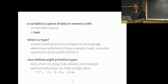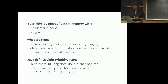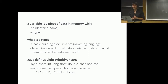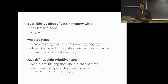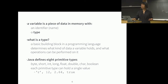What did we talk about last Thursday? We went into some nitty-gritty overview of Java basics. We talked about really basic things like what a variable is — a piece of data and memory that has both a name and a type associated with it. We talked a lot about different kinds of types, which are the basic building blocks of programming languages like Java. Java has eight different types of primitives.